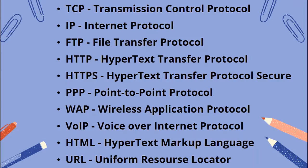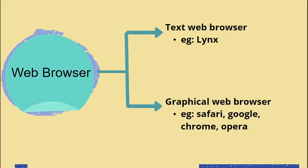TCP/IP — there are a few common terms and abbreviations. Let's go to the web browser. There are two types of web browser: one is a text web browser and the other is a graphical web browser.